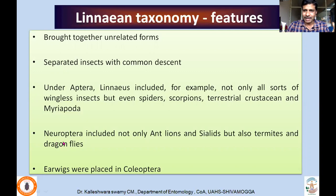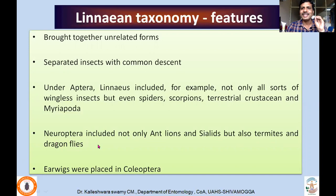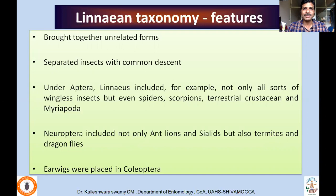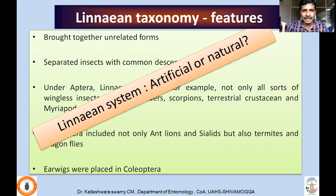Another example is that Neuroptera included not only antlions and sialids, but also termites and dragonflies. The reason being termites and dragonflies have membranous type of wings, and as a result he included them under Neuroptera. Now we know that termites and dragonflies are exopterygote and hemimetabolous insects, whereas Neuropterans are holometabolous insects — they do not come from a common ancestor. Similarly, earwigs were placed under Coleoptera because they have a hard elytra type of forewing, which is short — he included them under Coleoptera.